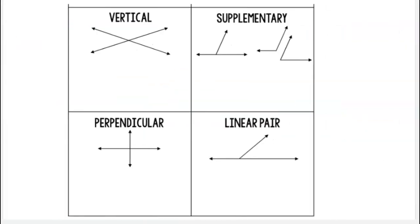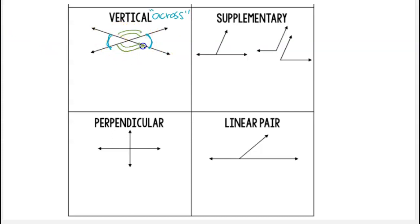Our next pair of angle relationships is vertical angles. These are the angles described as across from each other. I've shown with the same arc marking on both of these. I also have a second pair of vertical angles here, and notice that I've changed the marking, because the one with two marks is a different angle measure than those marked in blue.